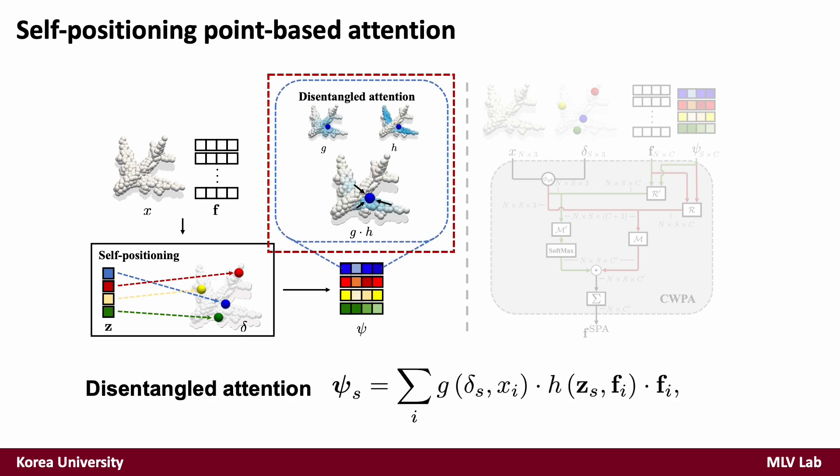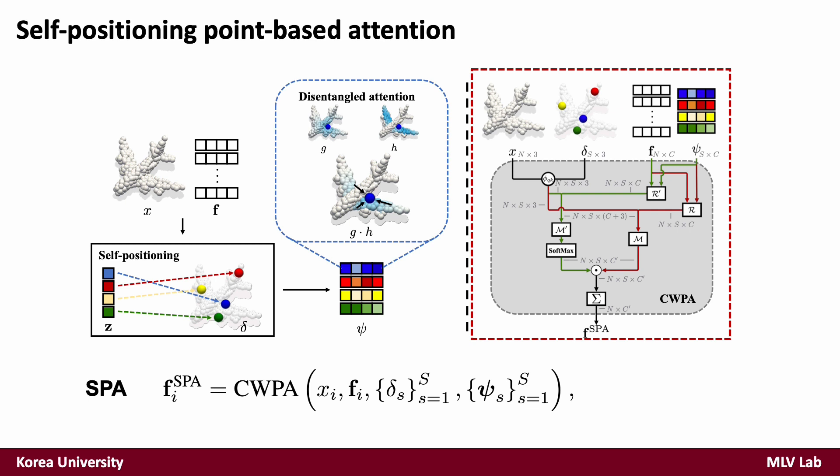Then SP points aggregate features considering both spatial and semantic proximity, and construct psi — the feature of SP points — via disentangled attention. The disentangled attention, which works similarly to the bilateral filter, allows the SP points to have greater descriptive power. Then SPA performs channel-wise point attention between input points and SP points to generate the output features F_SPA.